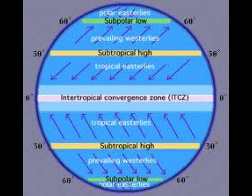Global winds. Trade winds are located at 30 degrees north and south of the equator. Prevailing westerlies are located between 30 and 60 degrees latitude on both sides of the Earth. Polar easterlies are located at 60 degrees latitude.